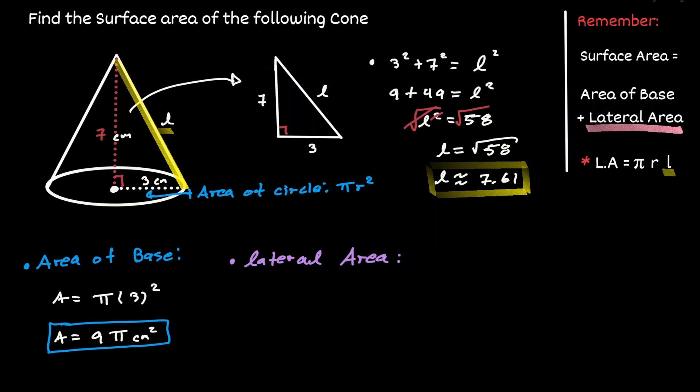Now that we know the lateral height, we can define the lateral area. We know that the area is equivalent to pi R times the lateral height, where R is the radius of the circle, which is 3, and the lateral height is the height on the side of the cone, which we can approximate to be 7.61.